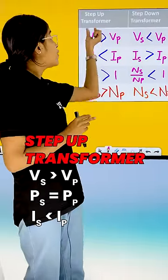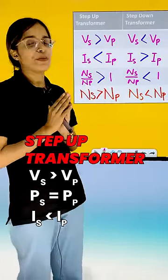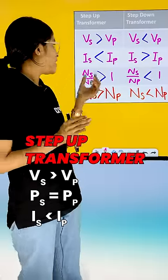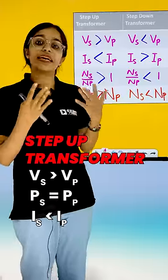So, Vs is greater than Vp, which means Is is less than Ip. When we are confused, we recall that ns divided by np is greater than 1.